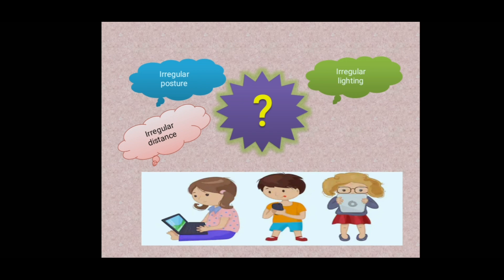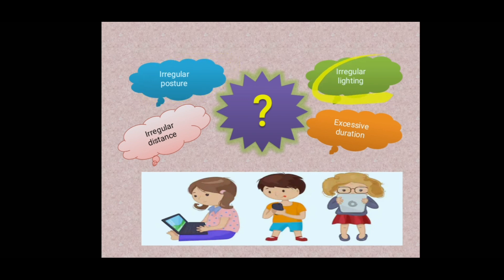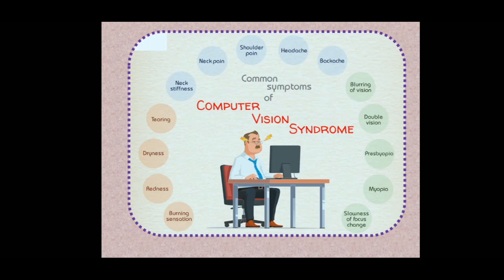Additional factors include irregular distance — the gadget and the eye should maintain a minimum distance — and excessive duration of use. We spend too much time using gadgets and forget to maintain proper distance, causing more stress to the eye. Irregular posture, irregular lighting, irregular distance, and excessive duration all result in symptoms and diseases.